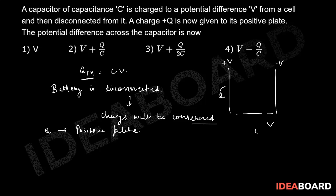So both plates are same. So this charge Q will distribute like this Q by 2 and Q by 2. So now what will be the potential drop because of this?